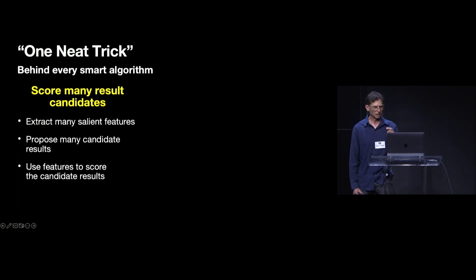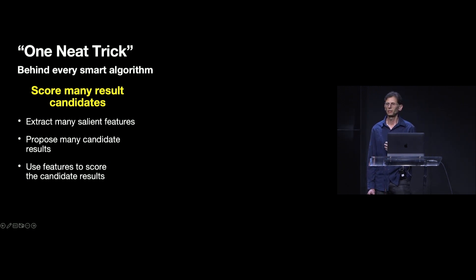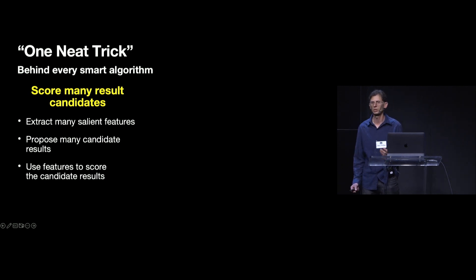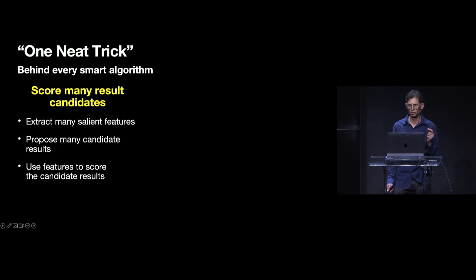Now I want to show you how I think through an algorithm design problem. I want to teach you the one neat trick that really captures how we resolve ambiguities — the technique that makes smart algorithms smart. I like to summarize this technique as: score many candidate results. We want our algorithm to capture every reasonable result we might need to return, then quantitatively score how well each candidate solves the problem. Once we have those scores, we can return the best-scoring candidate, multiple good-enough candidates, a weighted average, or some other aggregation based on the needs of our application.